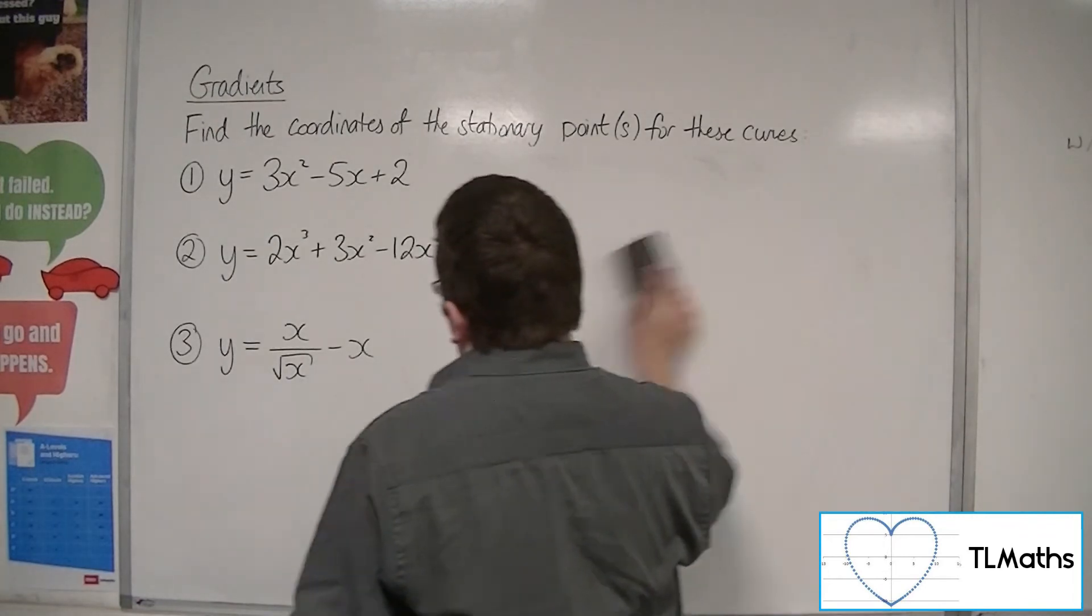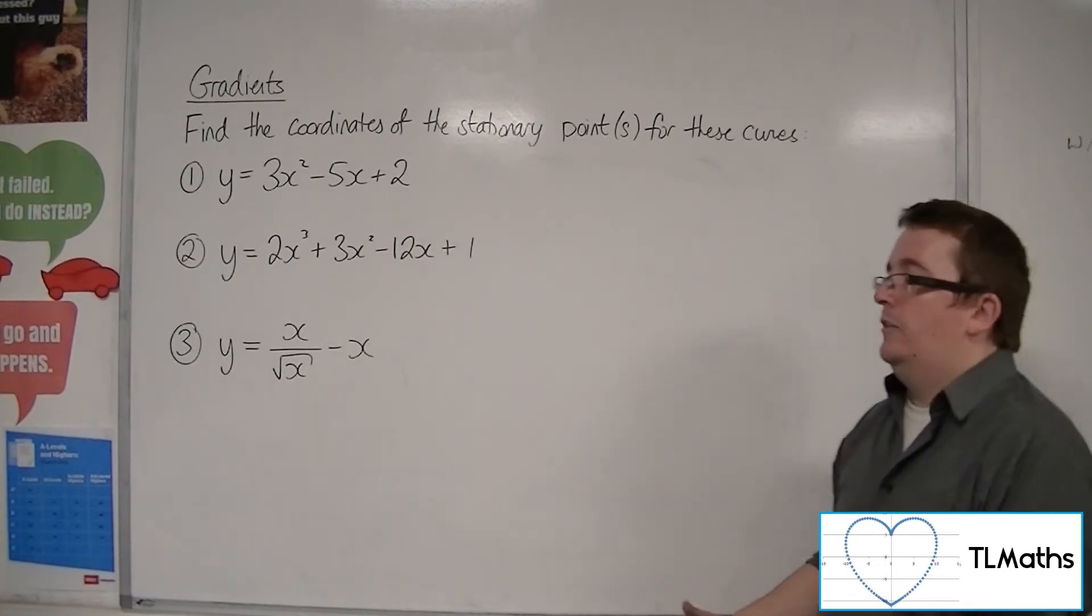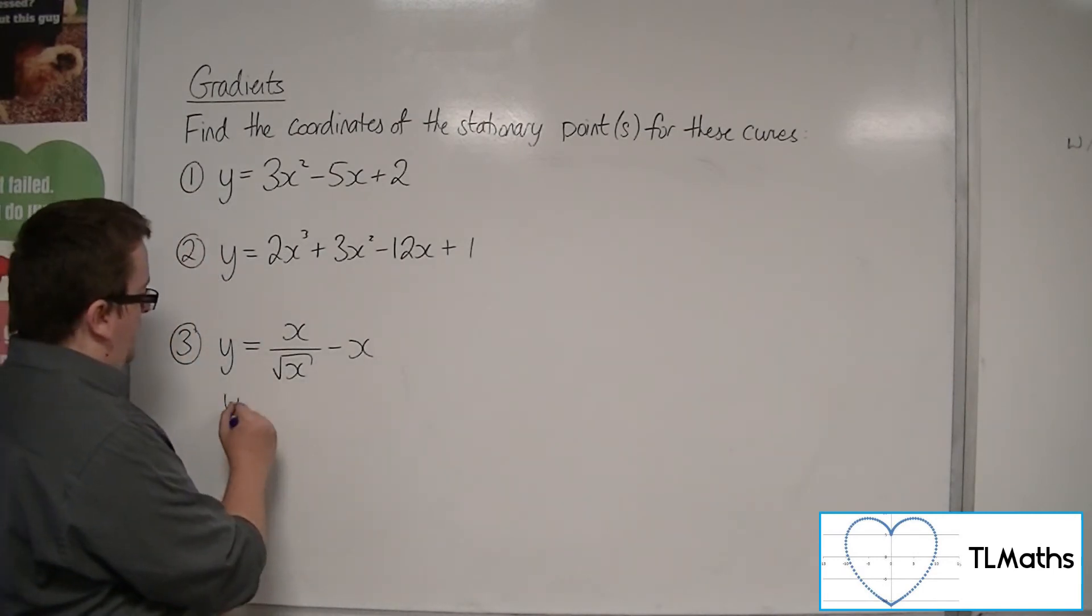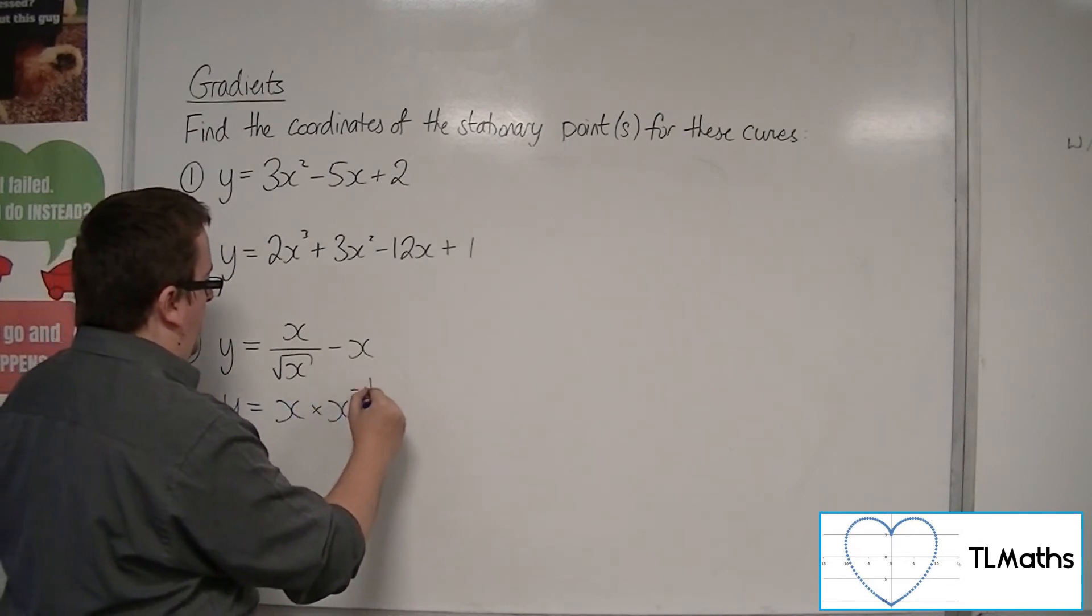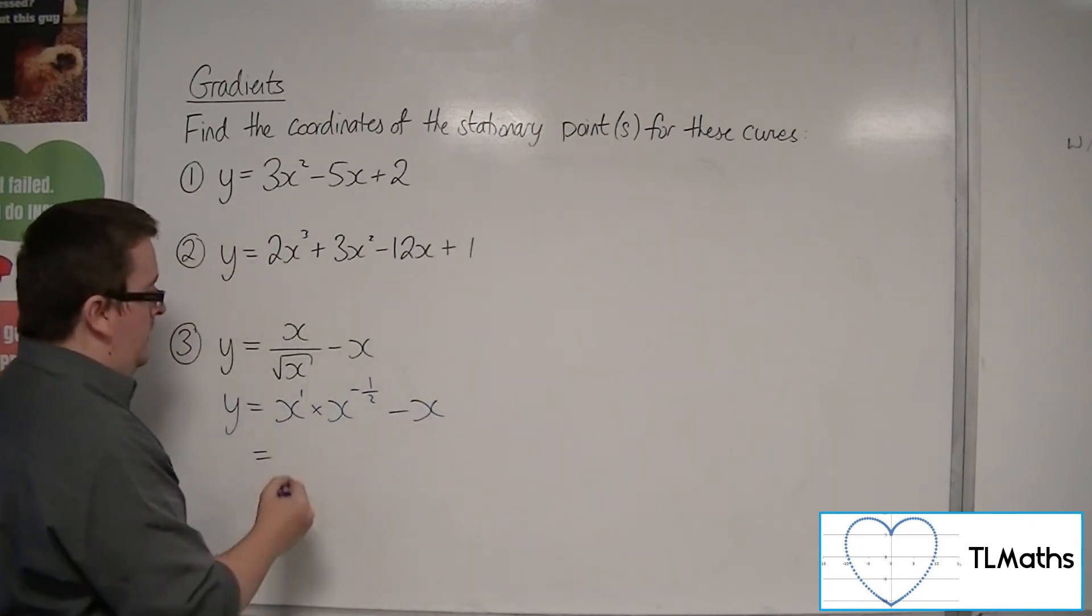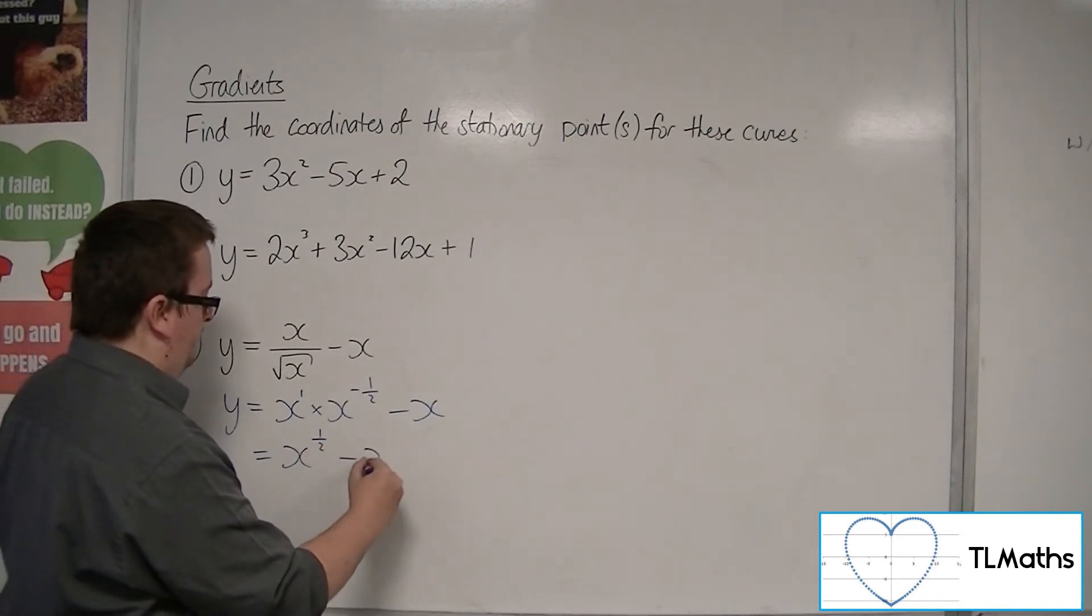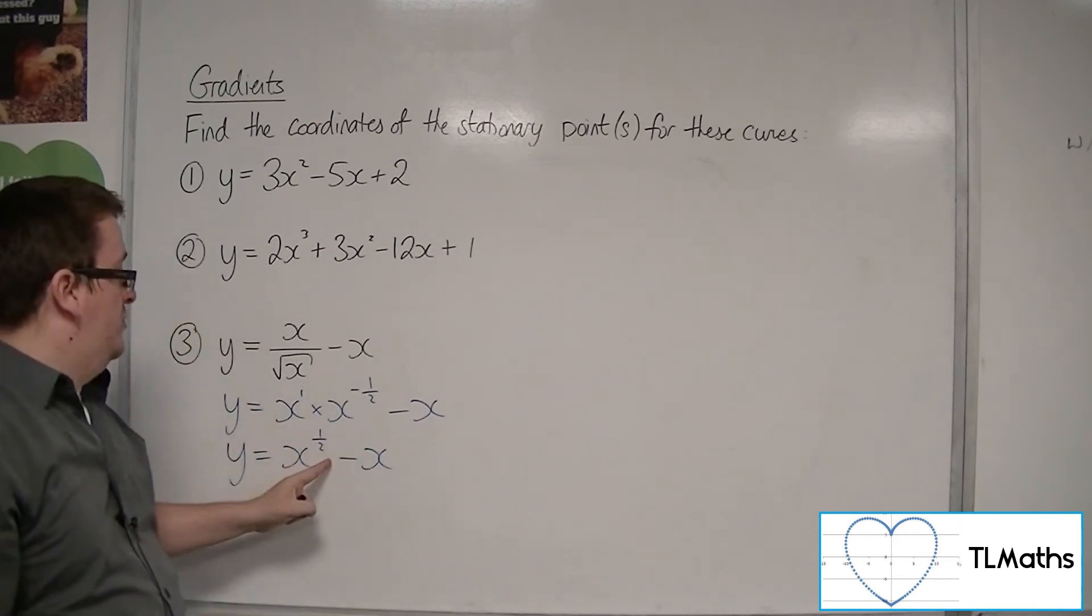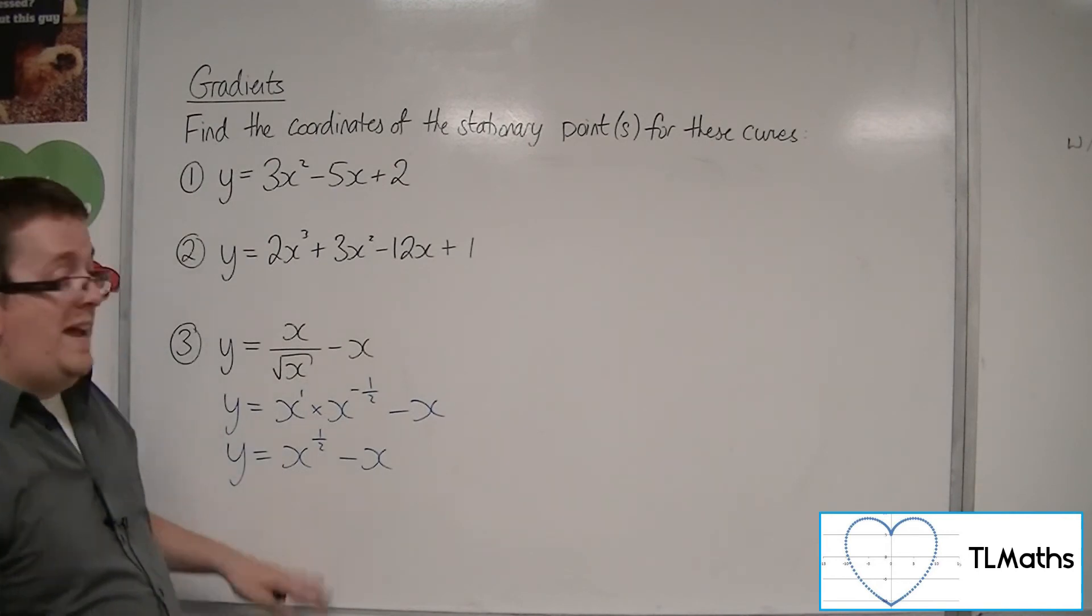If we have a look at number 3, we've got y is equal to x over root x, take away x. So in order to differentiate that, I'm going to have to simplify it first. If I write that as x times x to the minus 1 half, so it's x to the 1 times x to the minus 1 half, take away x. That will just be x to the half. So adding the indices, 1 take away 1 half is just a half. So this is the same as root x. So now I can differentiate that.